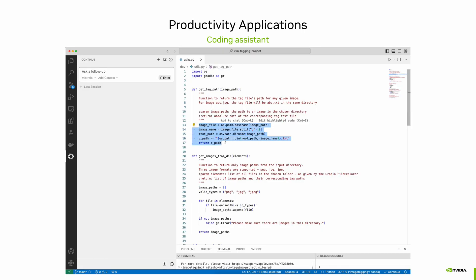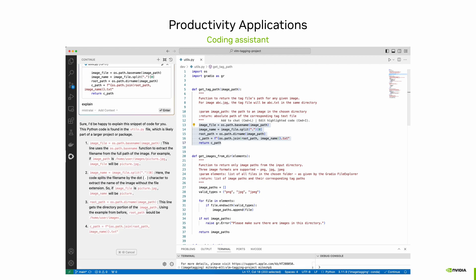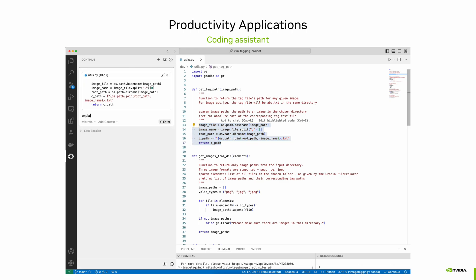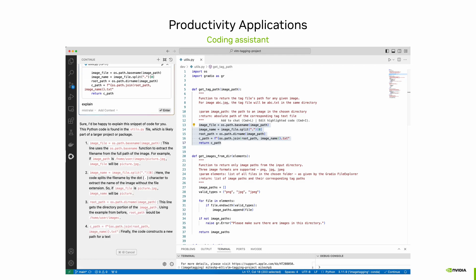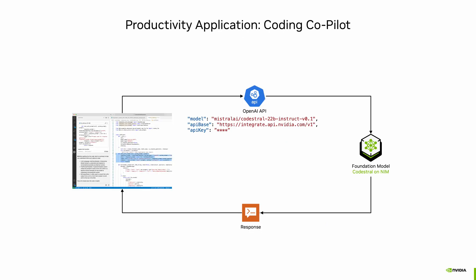The other application I'd like to showcase is a coding assistant and how one can bring their favorite coding assistant into the development environment. There are many coding assistant models available, but before using them, you'll need to configure them in your development environment. Before getting started, you'll need to decide on which model you will use, where it is hosted, and what API protocol is used by the hosting service.